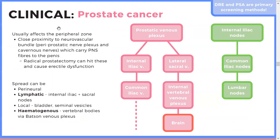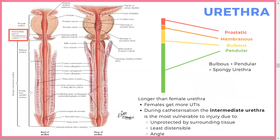Prostate cancer can spread via venous drainage through the internal iliac veins and common iliac veins, and can reach the brain via the internal vertebral venous plexus. Lymphatically, it typically spreads to the internal iliac nodes, then common iliac nodes, then lumbar nodes — deeper nodes rather than superficial. Spread can also be local and perineural.